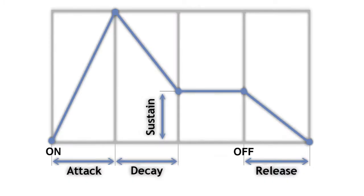Next we move to our amplifier section. Now this section has four very important parameters: Attack, Decay, Sustain, and Release. Those parameters are forming an envelope. Let's take a closer look at those parameters.